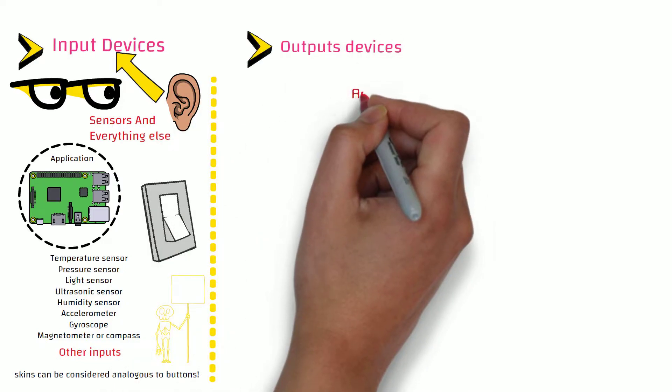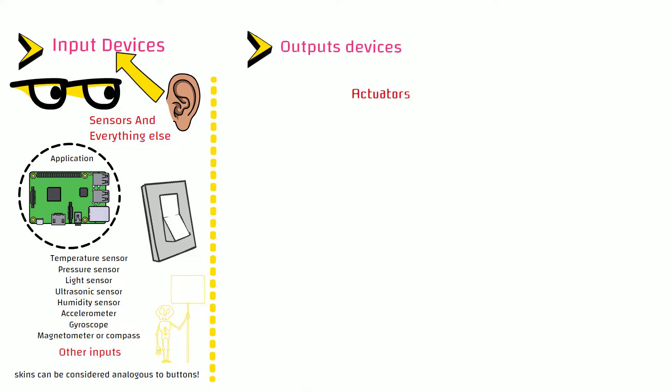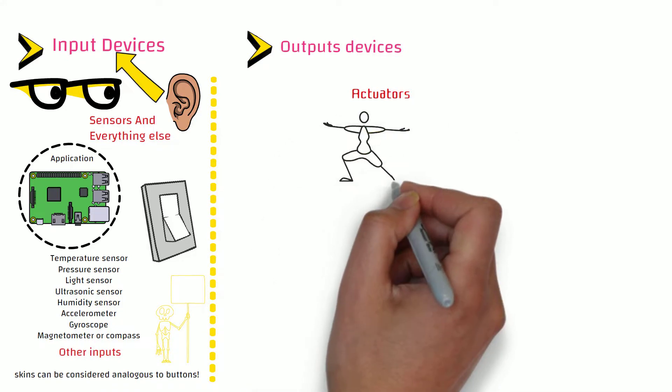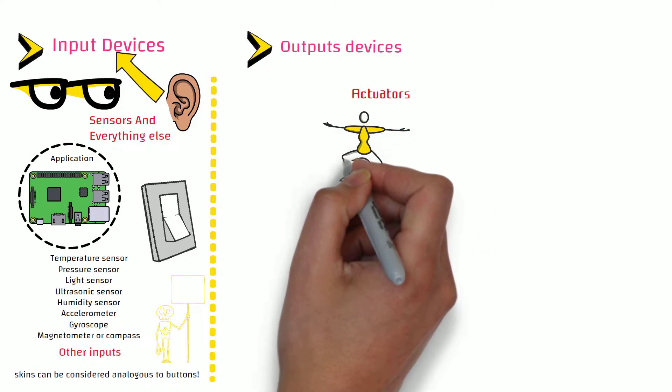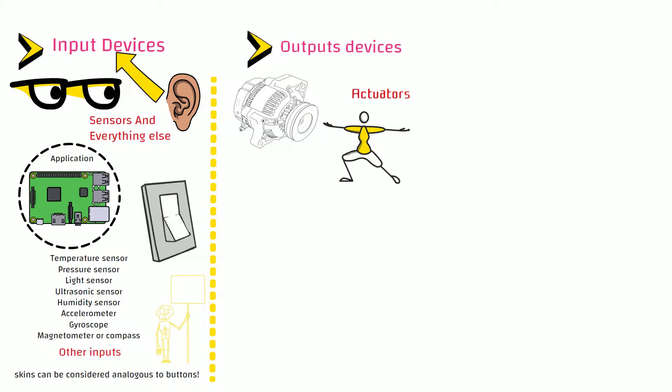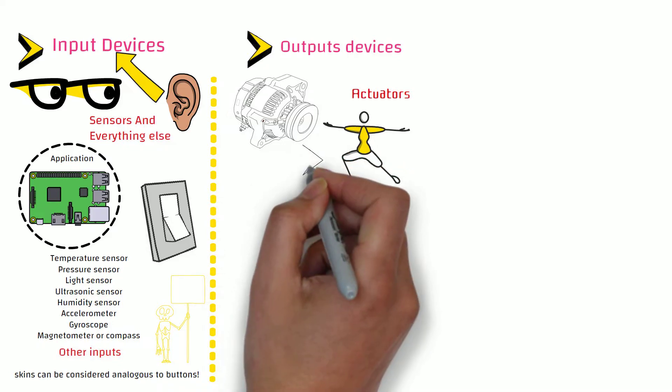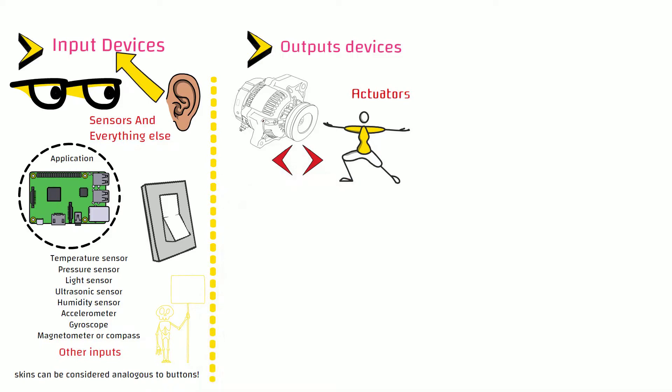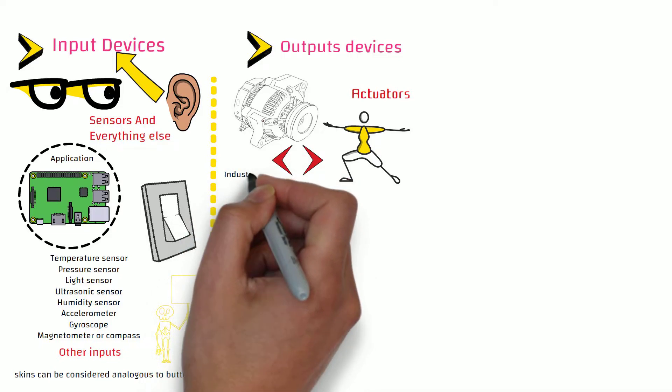Now, let us look at some output devices. Actuators can be considered as arms and legs of embedded system. They take instruction from the software and transform them into movement. For example, a motor can rotate forward or backward depending on the instructions given to it via the software, which in turn will make the embedded system move forward or backward in the environment.